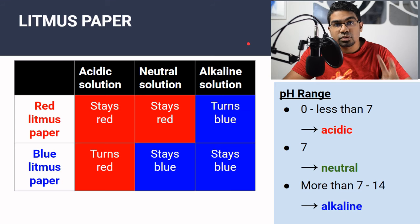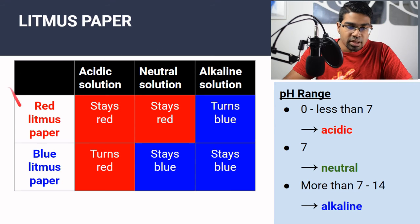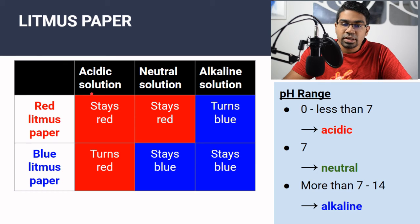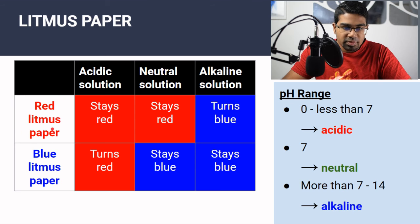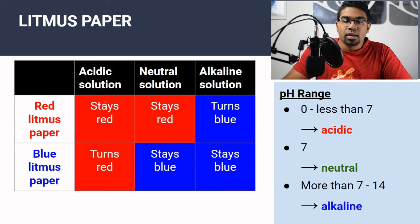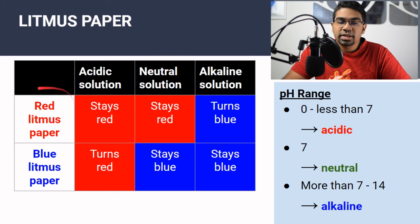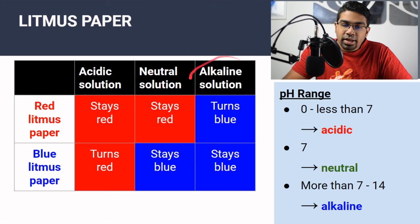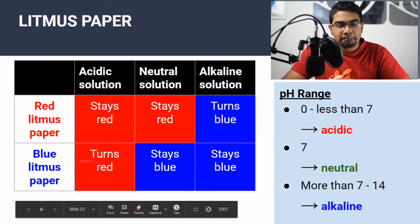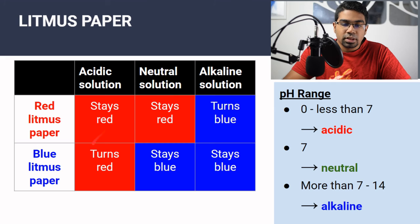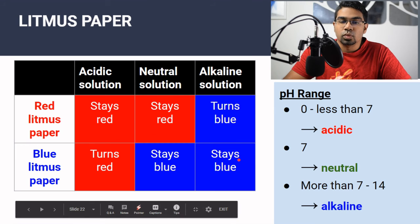Litmus paper comes in two forms: red and blue. For litmus, red always indicates acid and blue always indicates alkaline — unless there's no color change, then it is neutral. Red litmus paper in acidic solution stays red; in neutral solution it also stays red; in alkaline solution it turns blue. Blue litmus paper in acid turns red; in neutral solution it stays blue; in alkaline solution it also stays blue.